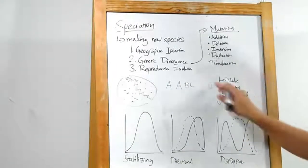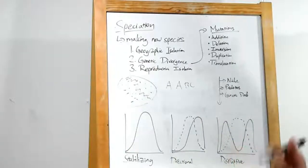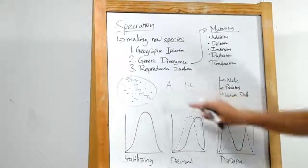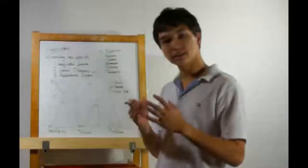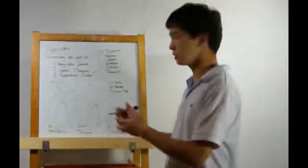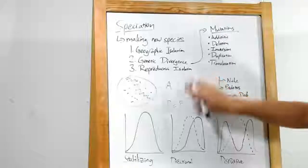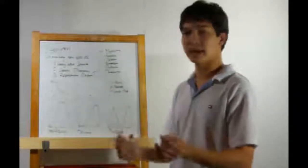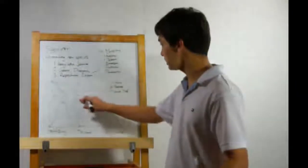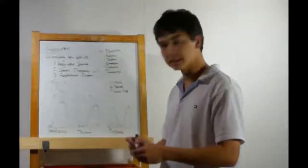And last up, translocation. For this one, we're going to need multiple chromosomes. So we have our ABC chain, and let's have another chromosome, maybe D, E, F. In a translocation, part of one chromosome will fall off and attach to another. Let's say the B and C fall off and attach over here. One chromosome ends at sequence A. Another one goes D, E, F, B, C. Translocation.